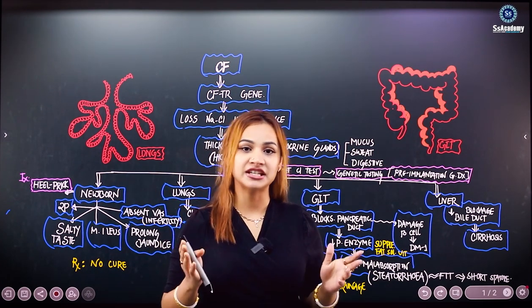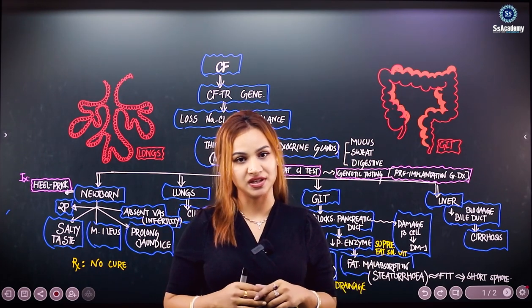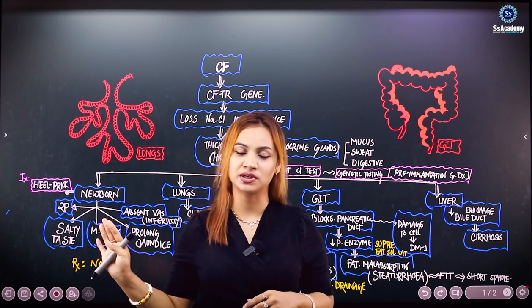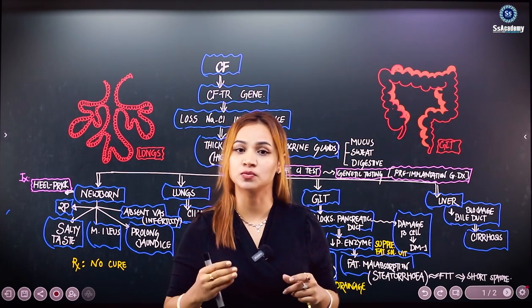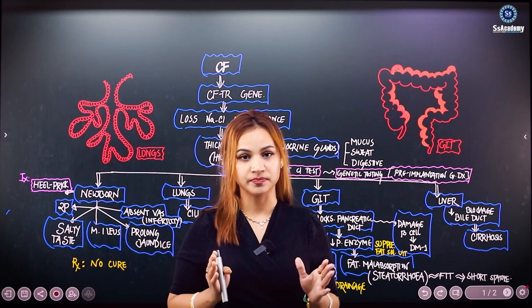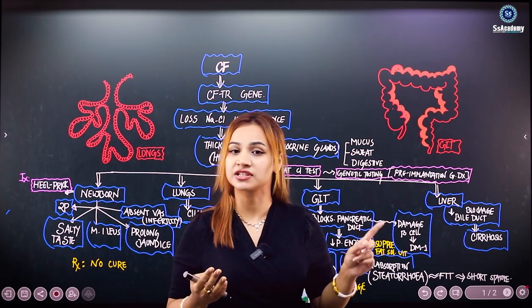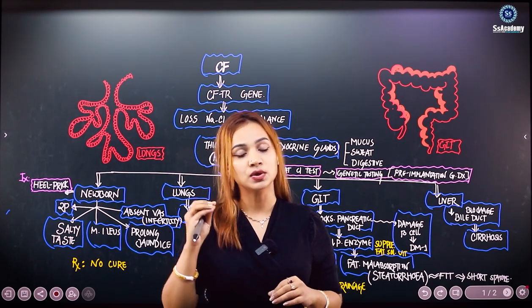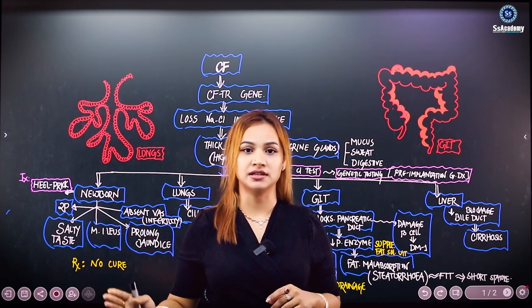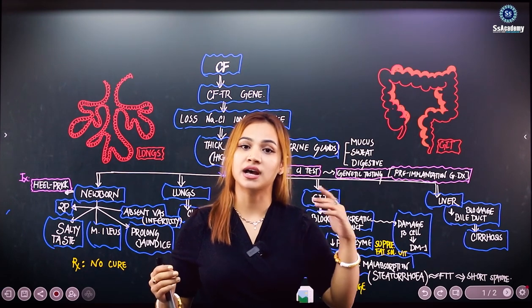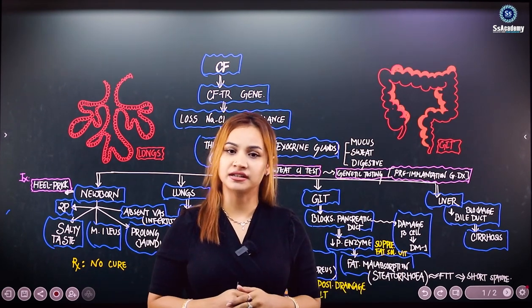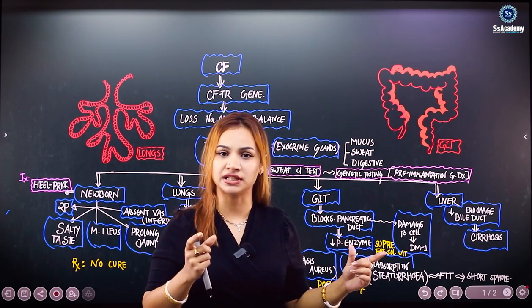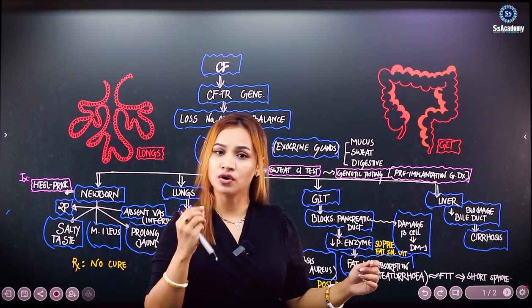Cystic fibrosis is an autosomal recessive condition — that means this is a genetic condition. There must be a defective gene. The gene defect in cystic fibrosis is the CFTR gene, that is the Cystic Fibrosis Transmembrane Conductance Regulator gene. From the name itself you can understand — this gene is regulating the membrane conduction of ions throughout the membrane.